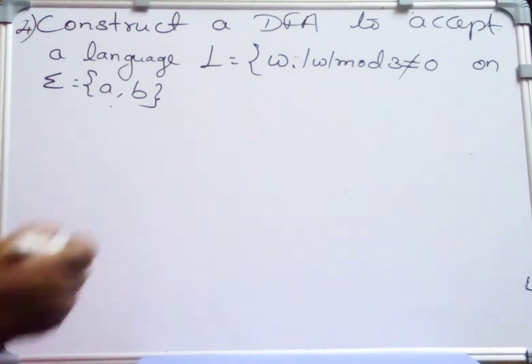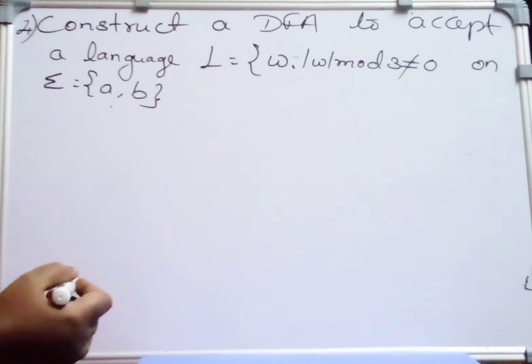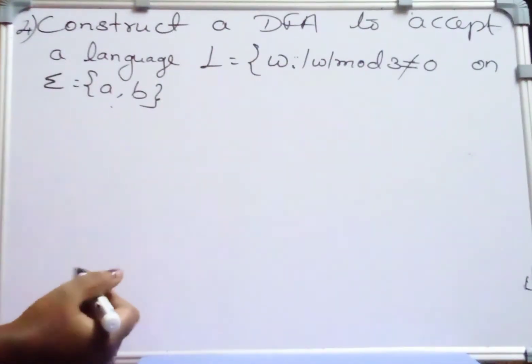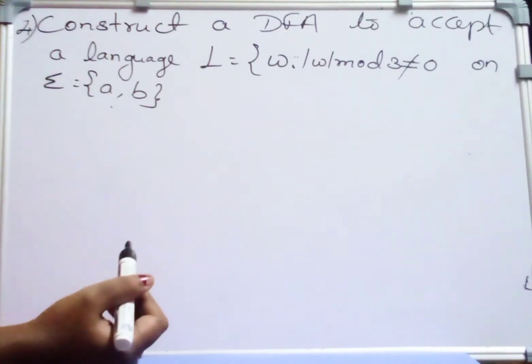In the previous video we have seen when W mod 3 equal to 0 how the DFA will be. Now in this problem when W mod 3 not equal to 0, how we should design the DFA.